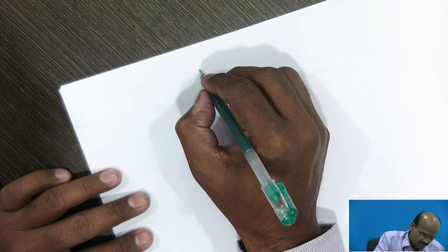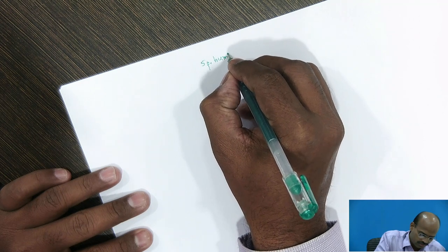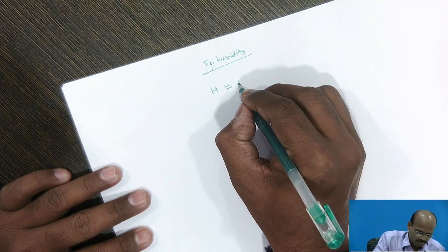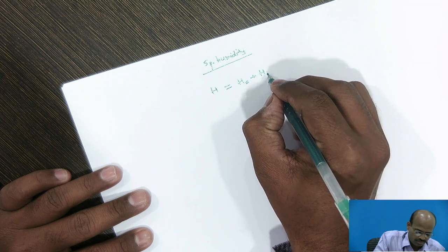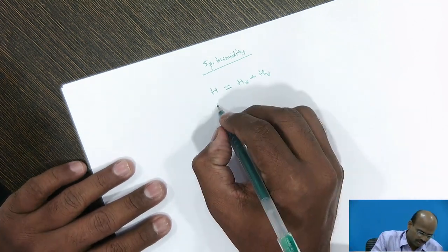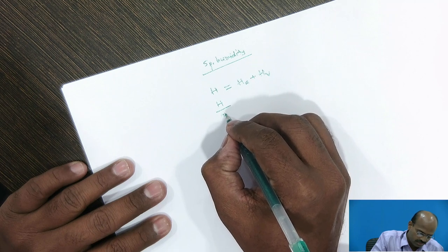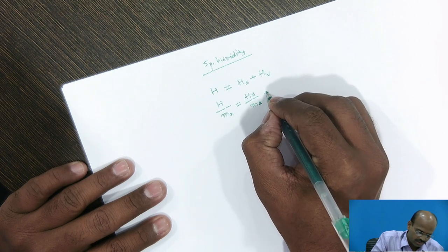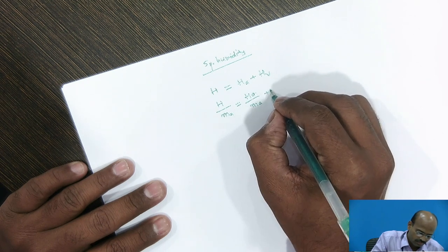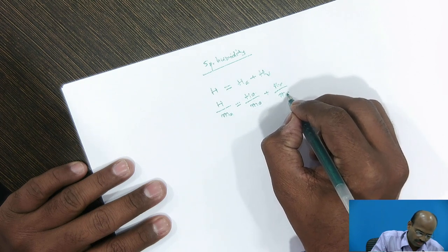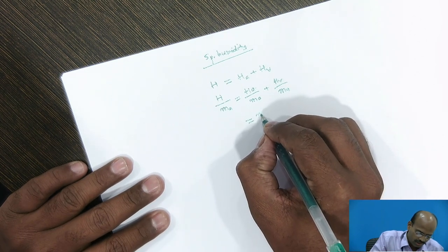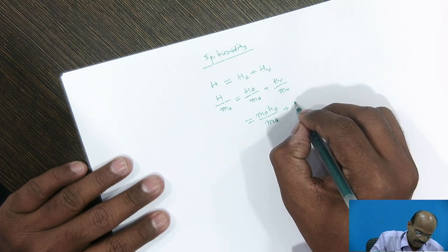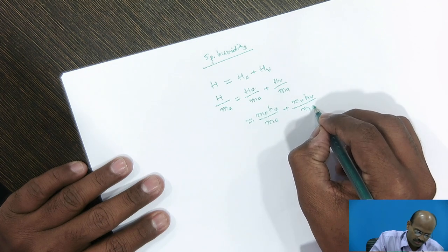Now, in this session, we will see the specific enthalpy of moist air. Specific enthalpy of moist air is equal to enthalpy of dry air plus enthalpy of water vapor. If I consider the enthalpy per mass of air, then on both sides, I will divide it by Ma, which is equal to Ma into specific enthalpy of air by Ma plus Mv into Hv by Ma.